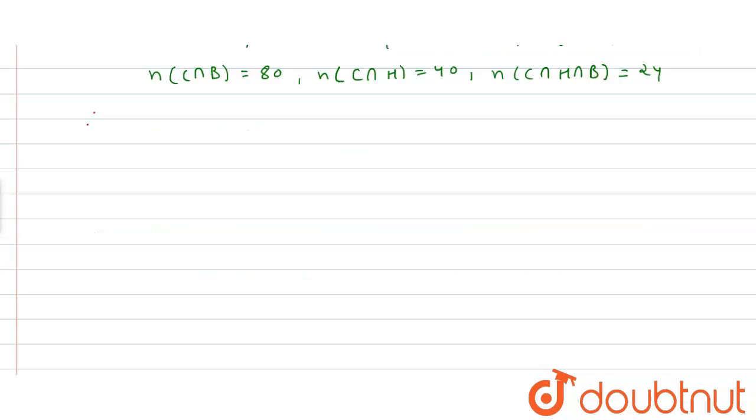Therefore, n(C ∪ H ∪ B) equals n(C) plus n(H) plus n(B) minus n(B ∩ H) minus n(C ∩ B) minus n(C ∩ H) plus n(C ∩ H ∩ B).